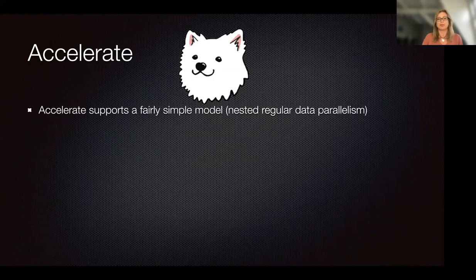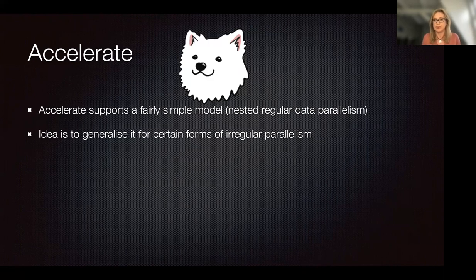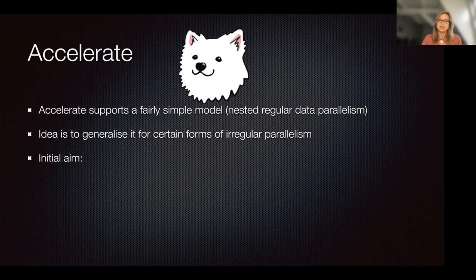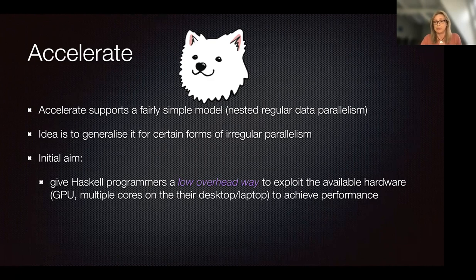With Accelerate we started from a different point of view — a fairly simple programming model: nested regular data parallelism. Starting from that simple model, the idea was to generalize it over time to support more complex but better-restricted irregular patterns. Initially the aim was to give Haskell programmers a low-overhead way to exploit the architecture they have — the GPU, multiple cores — to achieve performance.